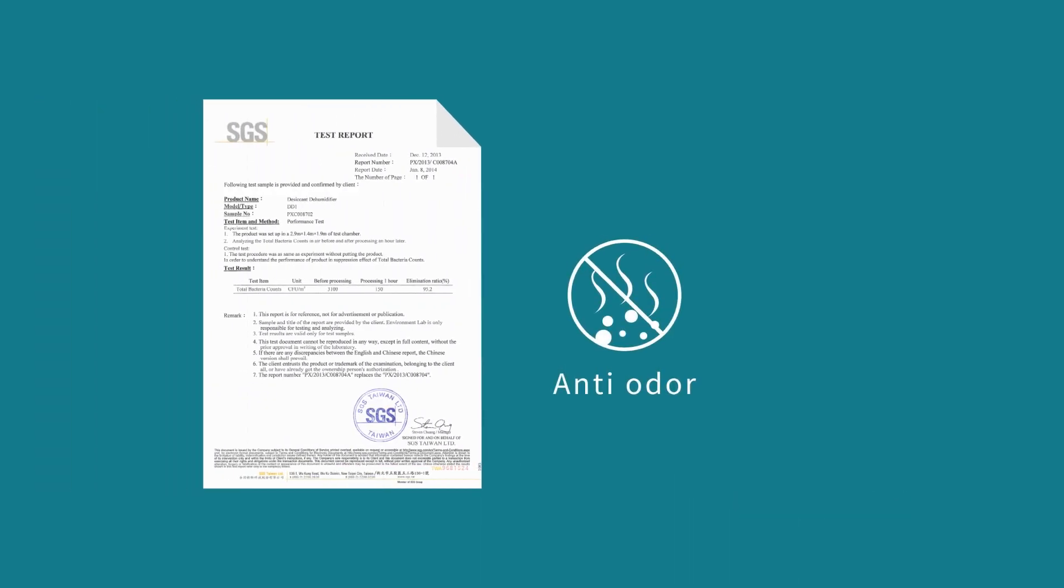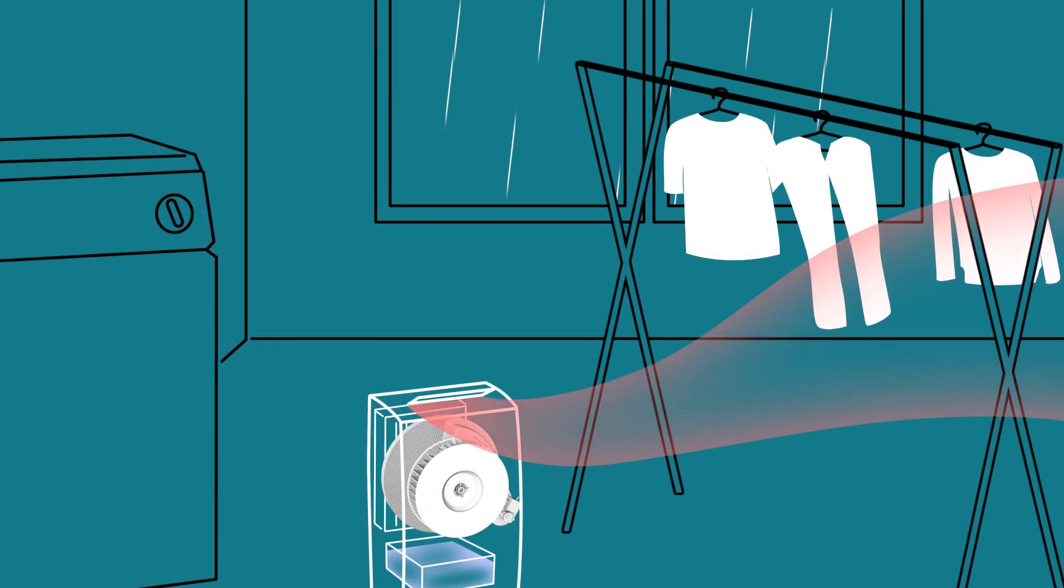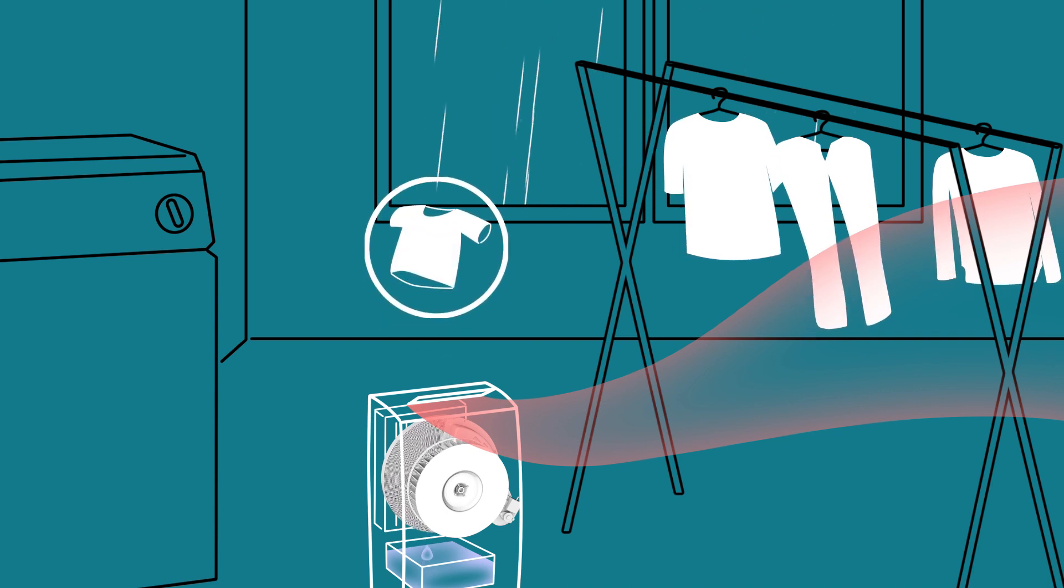The special coating on the desiccant rotor not only absorbs humidity but also eliminates odor and bacteria. Desiccant dehumidifiers can also be used as a clothes dryer because they include a heater as part of the dehumidification process and deliver warm, dry air.